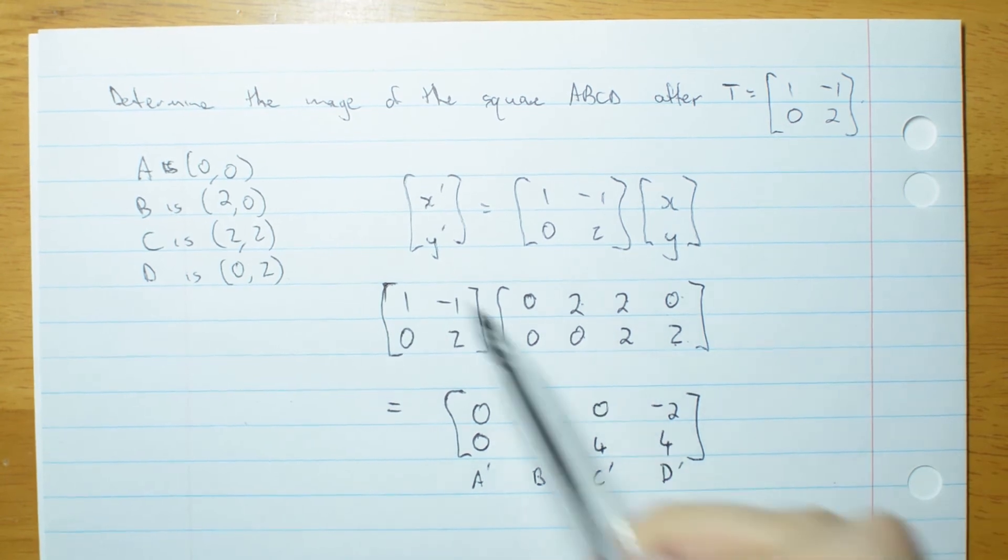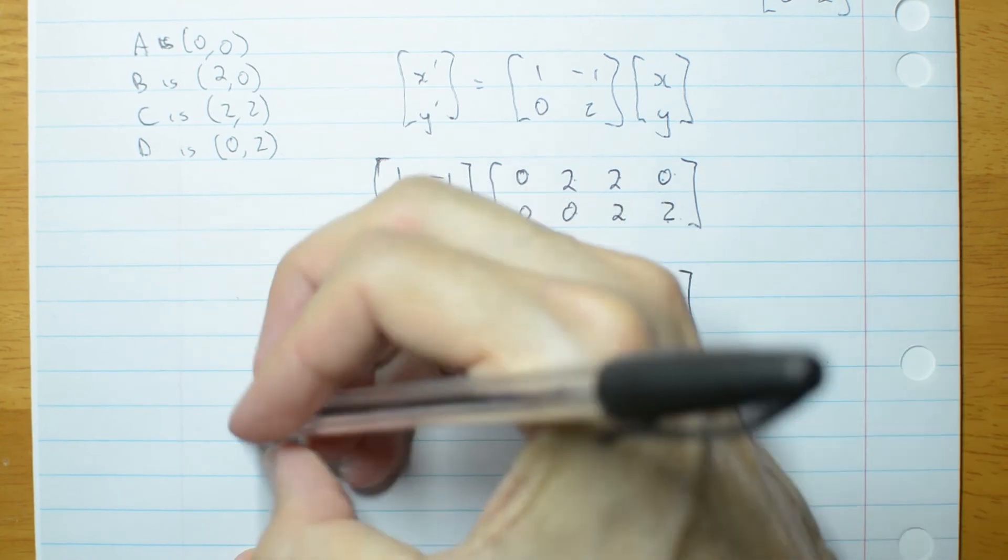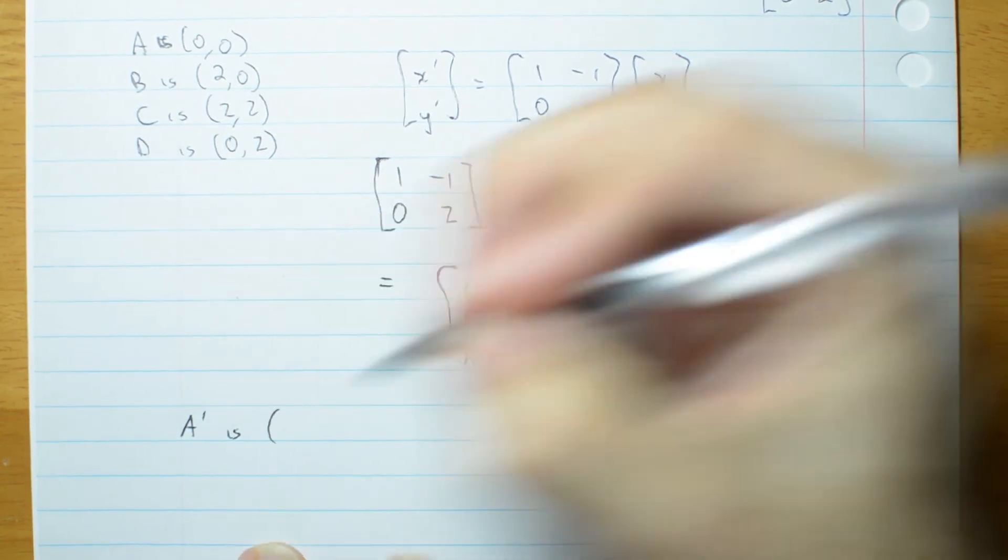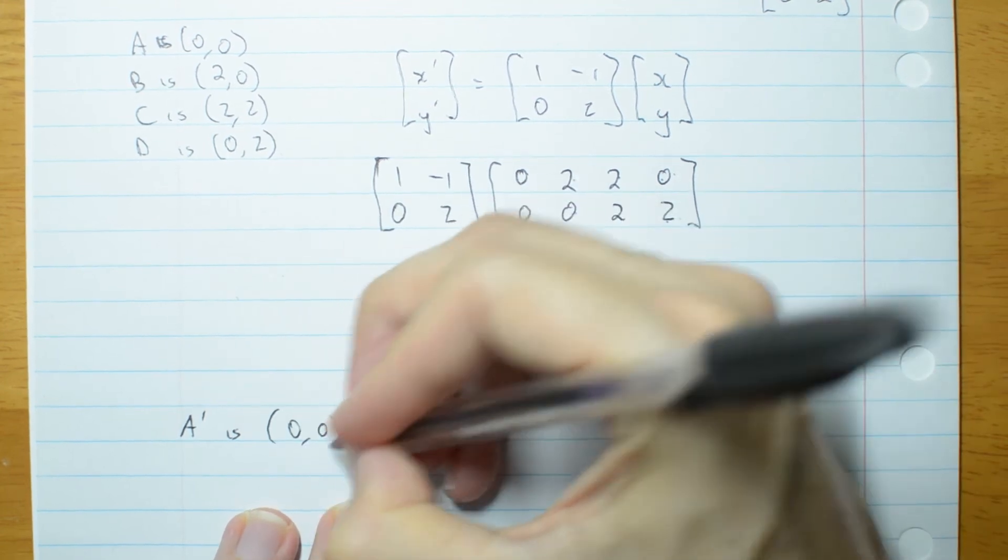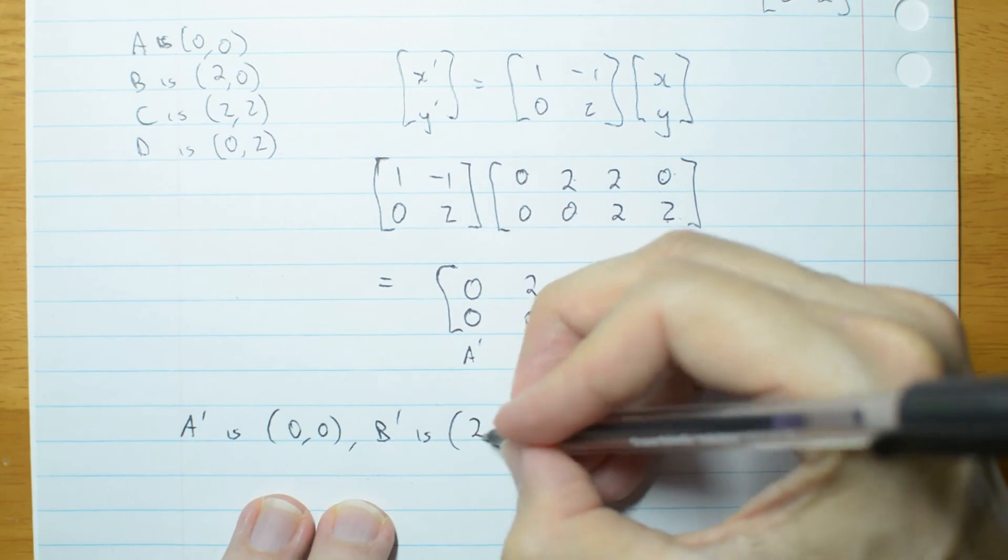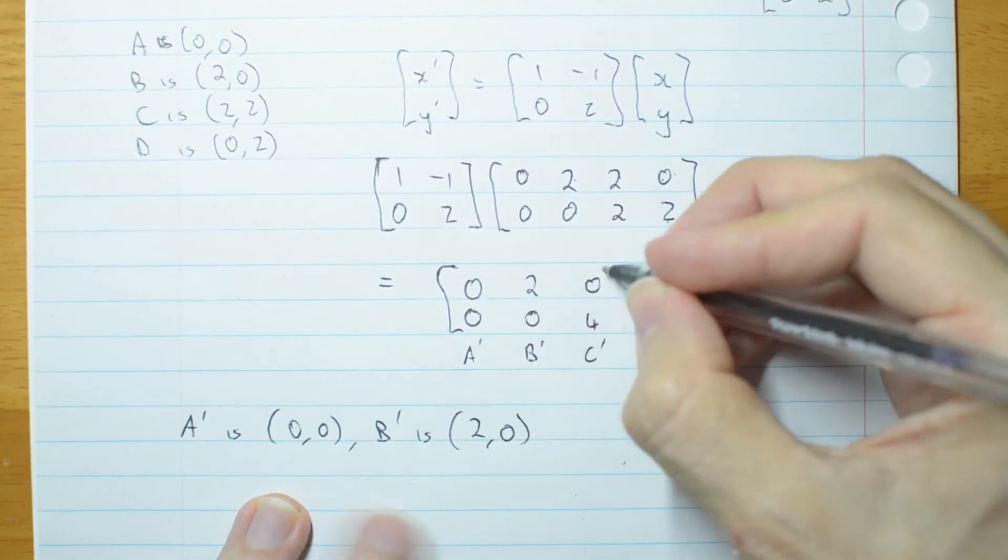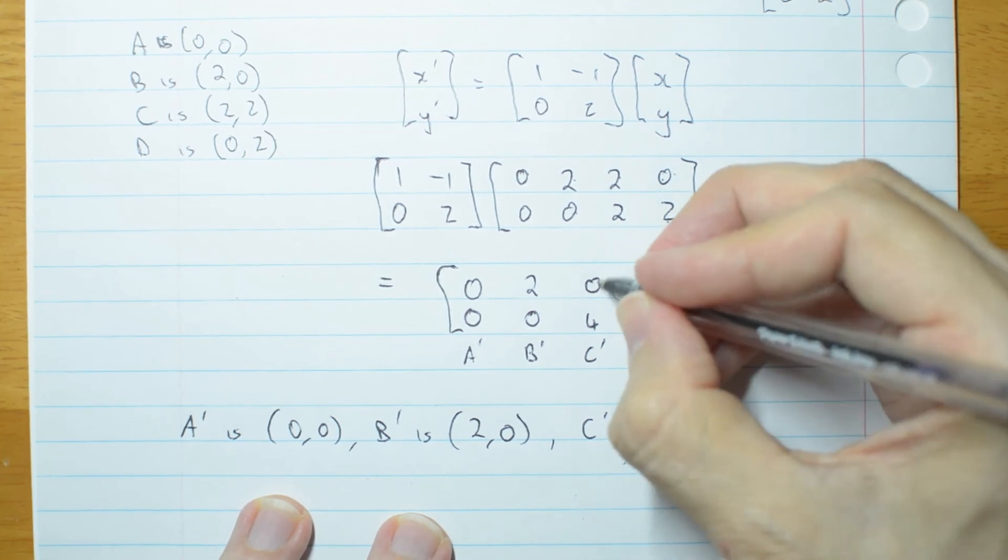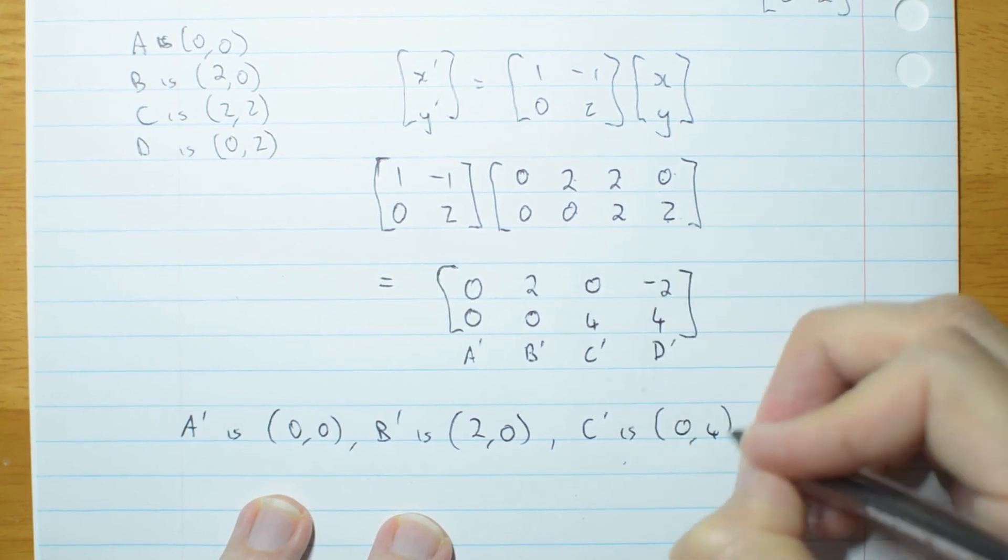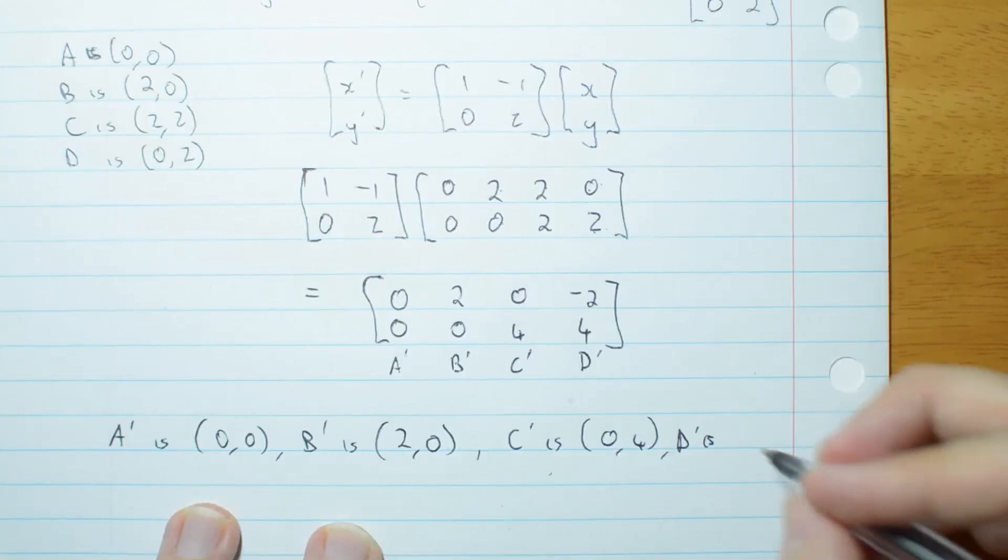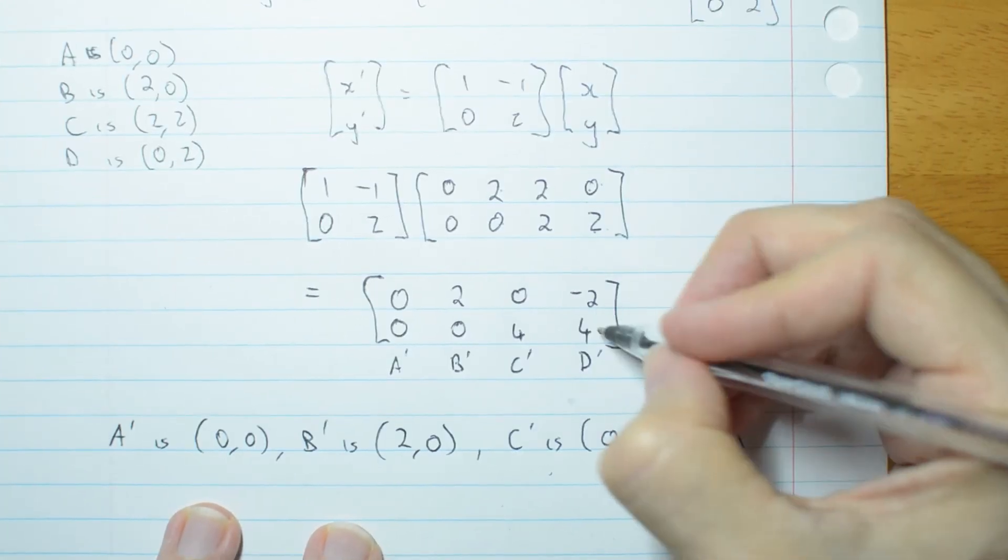Given how my question was written, I would actually write it out. So A primed is (0, 0). B primed is (2, 0). Then C primed is (0, 4). And D primed is (-2, 4).